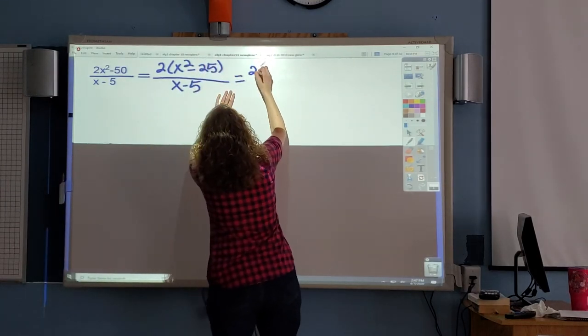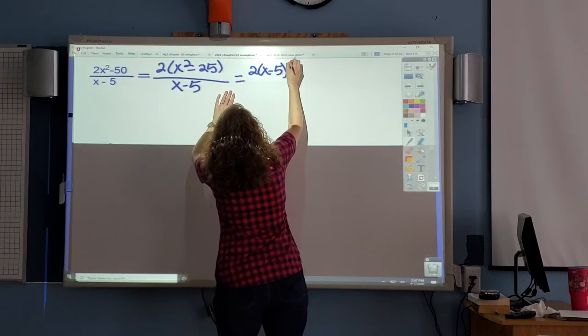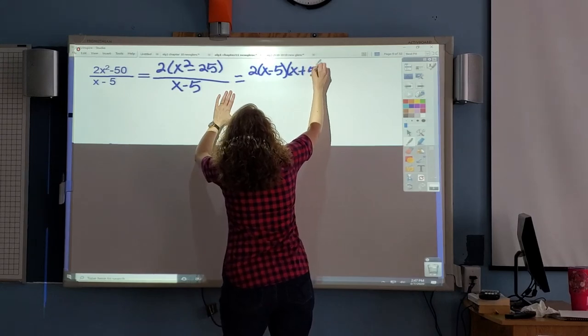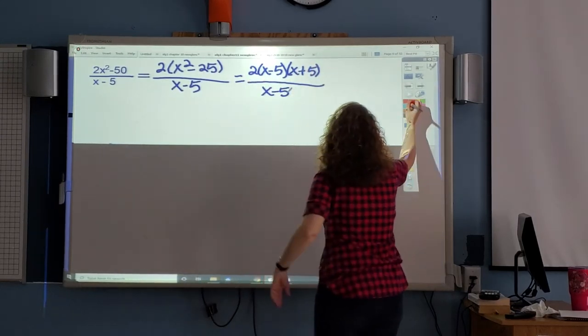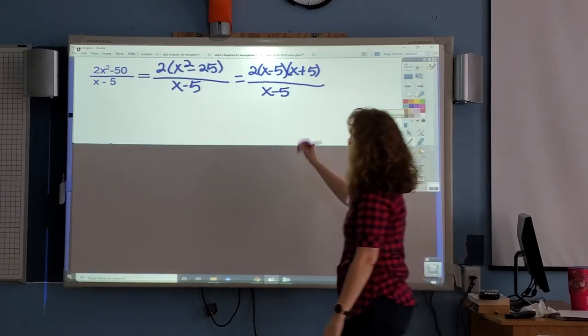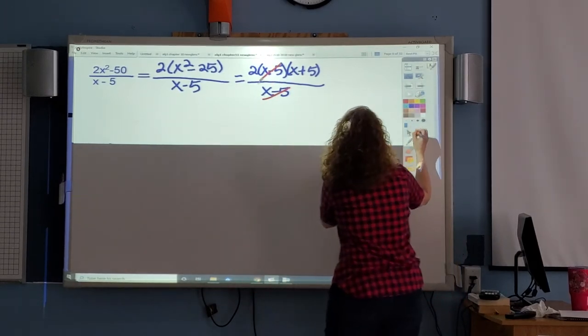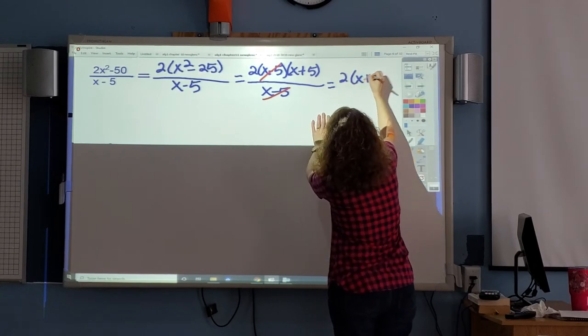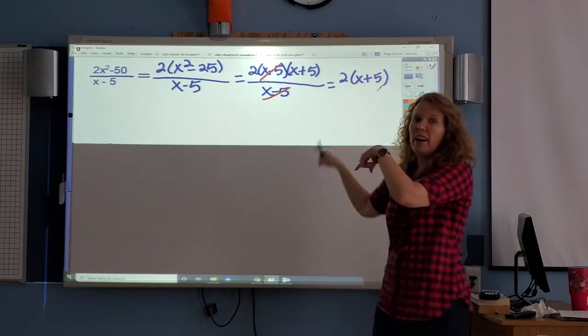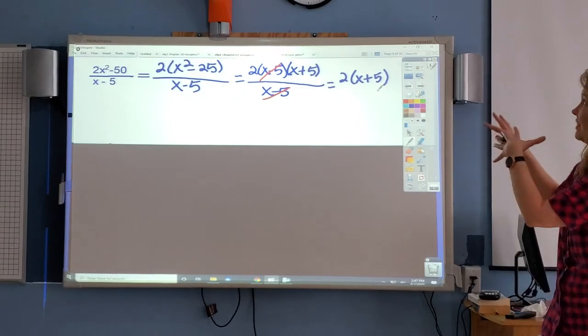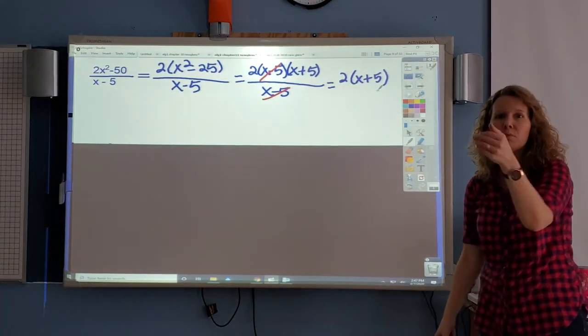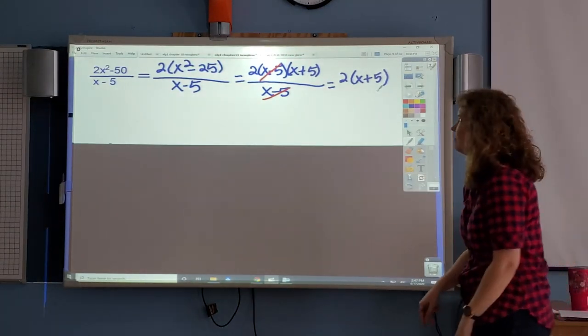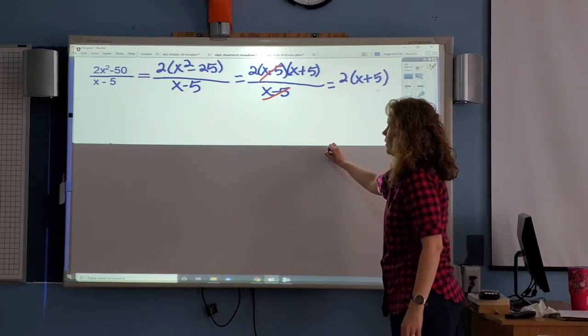What do you see, Jamie? x minus 5. They're gone. Your final answer is 2 times x plus 5. By the way, you do not have to distribute that back out. In fact, I like leaving it like that. But if any of you write 2x plus 10, that's all right.